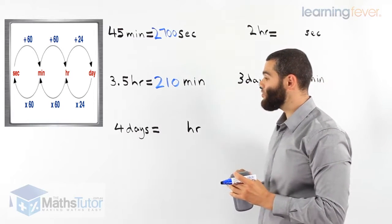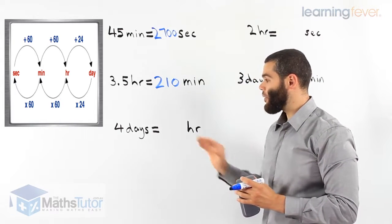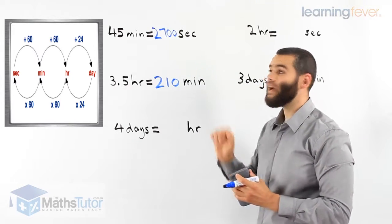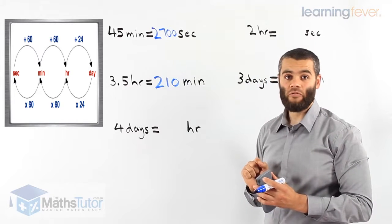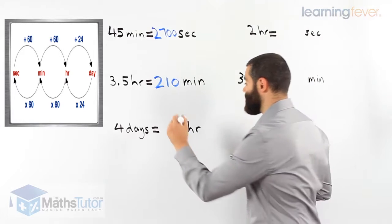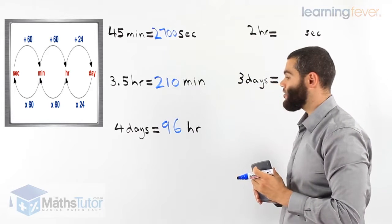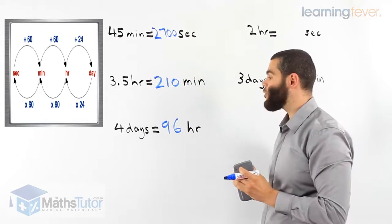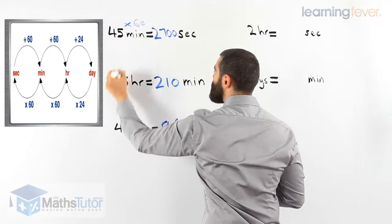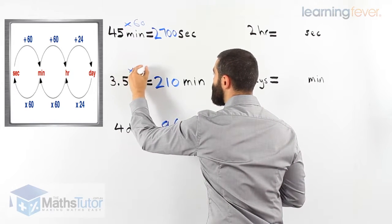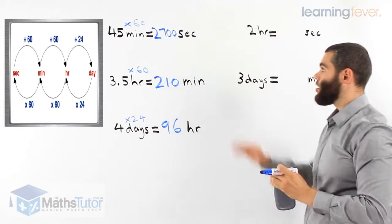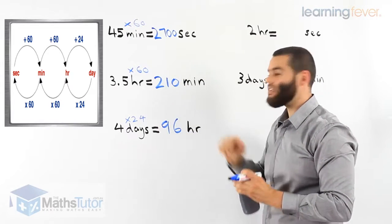In this example, we're asked to convert from days to hours. We have four days — we'd like to know how many hours are in four days. From days to hours, we multiply by 24. Therefore, four times 24 gives us 96 hours. In four days, there are 96 hours. So here we multiplied by 60, here we multiplied by 60, and four times 24 is 96. We show our working out and get our answer very easily.